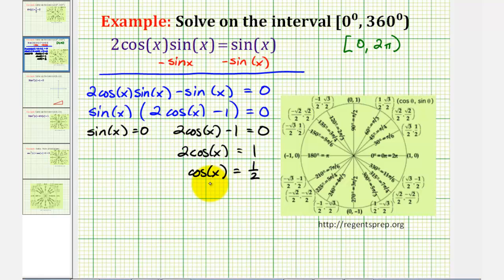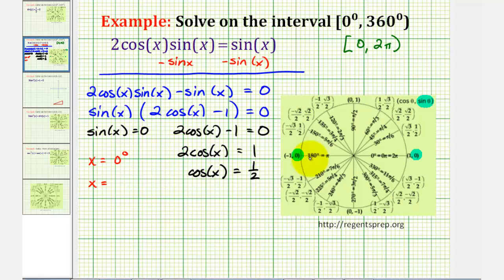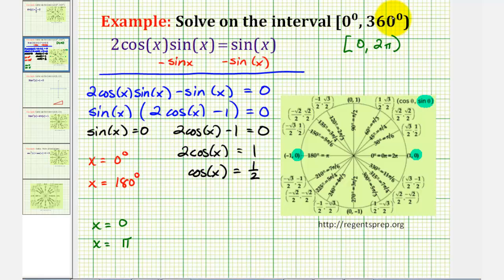Let's go ahead and find the solutions to these two equations using the unit circle. Remember, on the unit circle, sine theta is equal to y. So to find the angles where sine x equals zero, we're looking for points on the unit circle where the y-coordinate is equal to zero. That occurs at zero degrees as well as 180 degrees. So sine x equals zero when x equals zero degrees or x equals 180 degrees — or in radians, x equals zero or x equals pi. Note we do not include 360 degrees or two pi radians because the interval is open there.